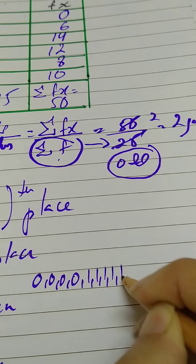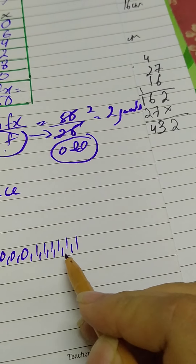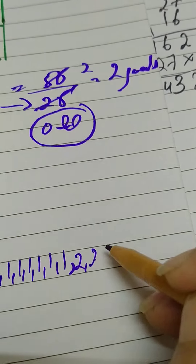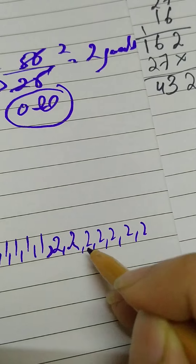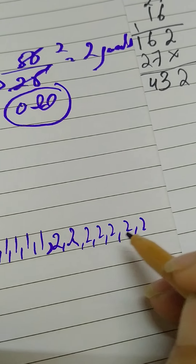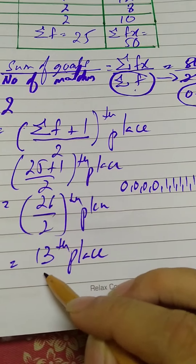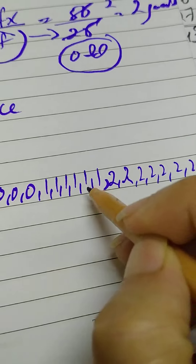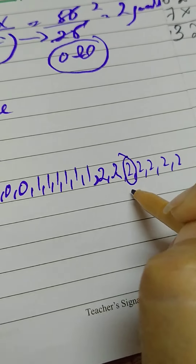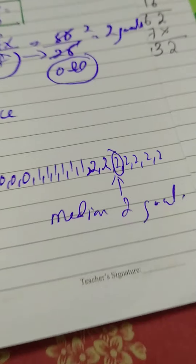Continuing: two goals occurred in seven matches, covering positions 11 through 17. The 13th position falls within the two-goals group. Counting: match 11, 12, 13 — the 13th match is in the two-goals category. Therefore the median is 2 goals. Mean, mode, and median are all equal to 2 goals for this data set.